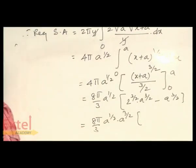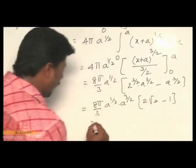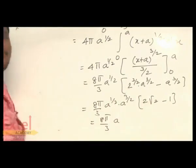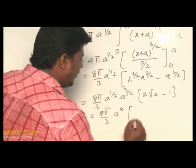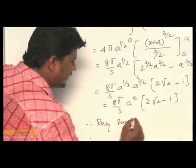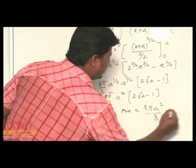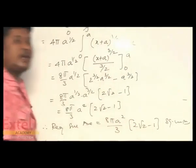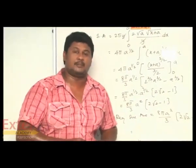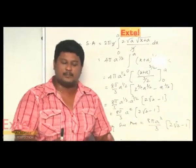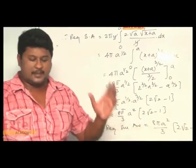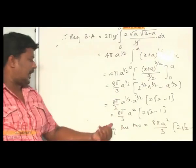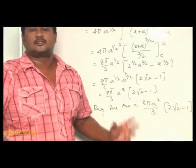Now 2^(3/2) can be written as 2 times 2^(1/2), which is 2 root 2. Adding exponents: a^(1/2) times a^(3/2) equals a^2. Therefore the required surface area equals 8π a squared divided by 3, times (2 root 2 minus 1) square units. This is the surface area of the solid generated by revolving the arc of the parabola y squared equals 4ax from its latus rectum about the x-axis.